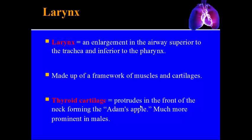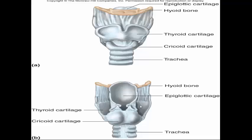The larynx, or voice box, is an enlargement of the airway just above the trachea and just below the pharynx. It's made up of cartilages and muscles. The thyroid cartilage protrudes outward forming what's called the Adam's apple, which is much more prominent in males and is easily visible in the throat.